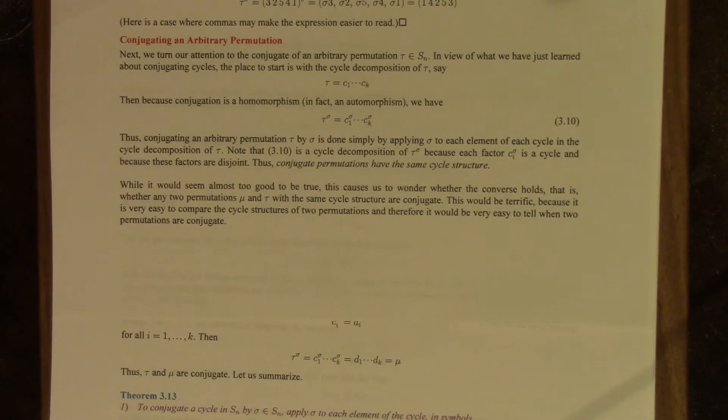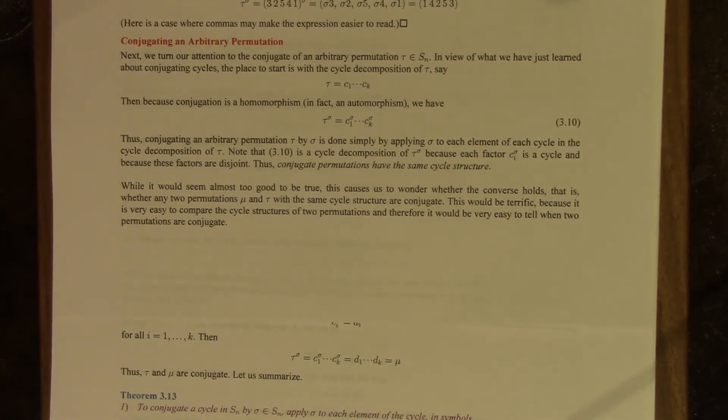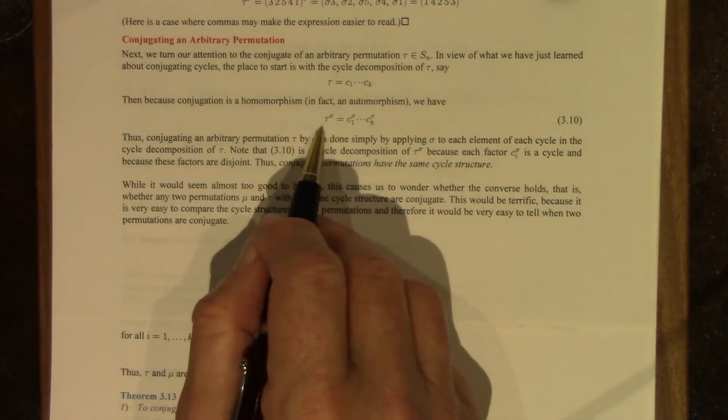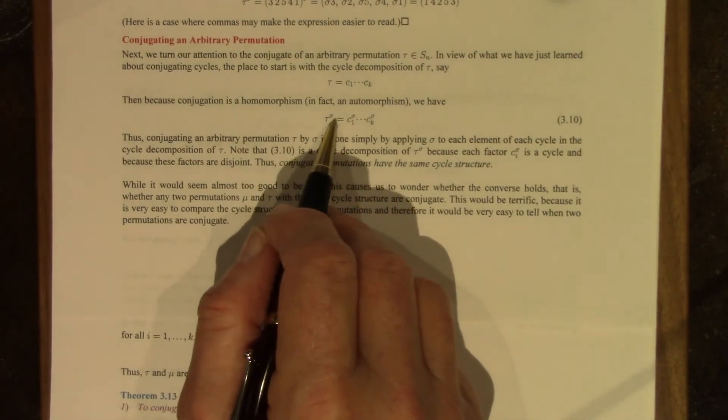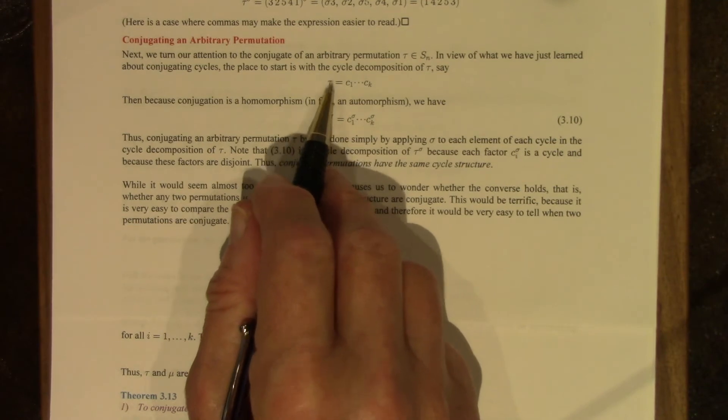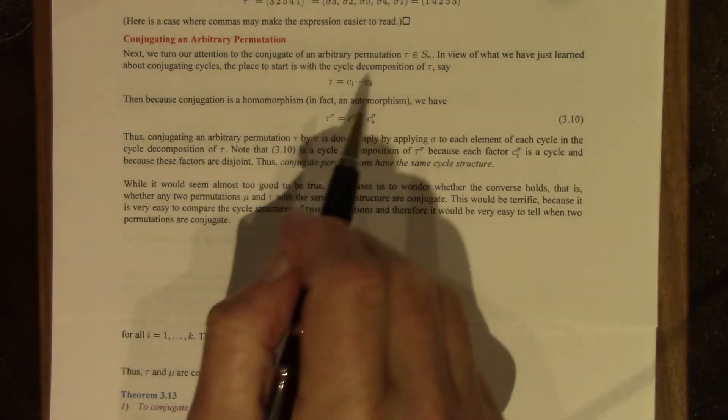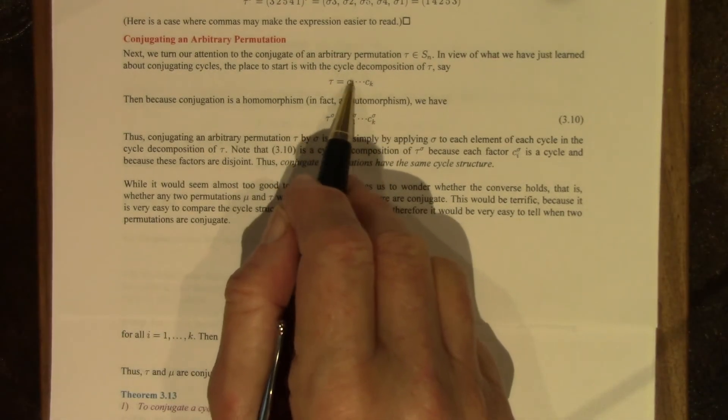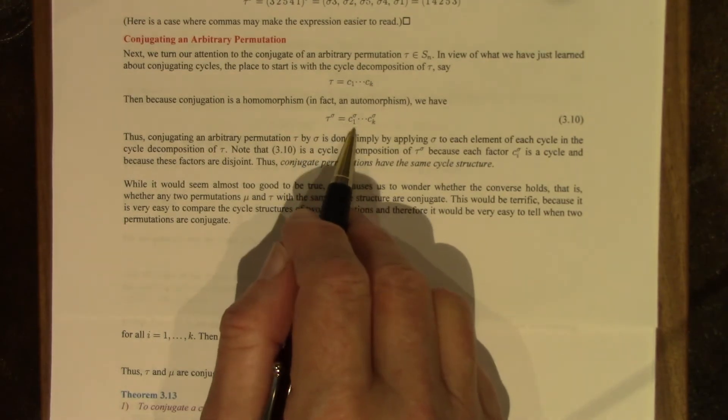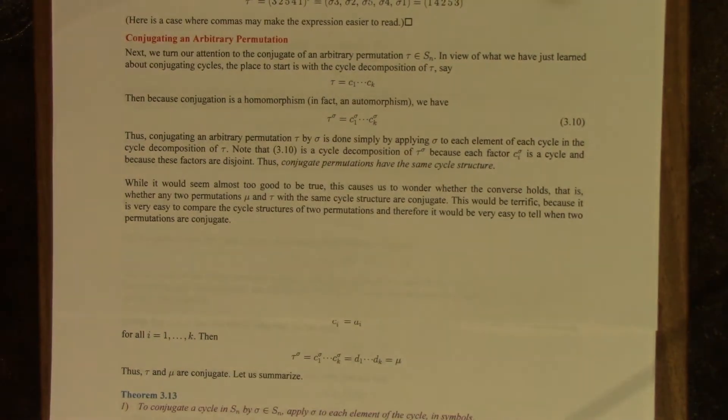Therefore, conjugate permutations have the same cycle structure. Tau conjugated by sigma has the same cycle structure as tau. C1 and C1 sigma have the same length, so we get the same cycle structure.